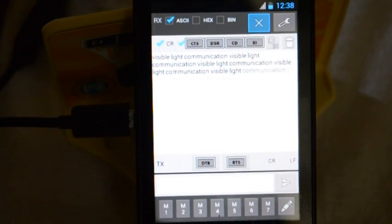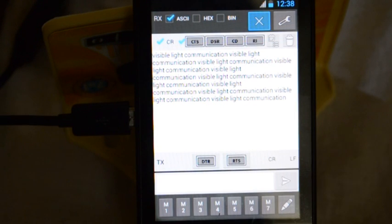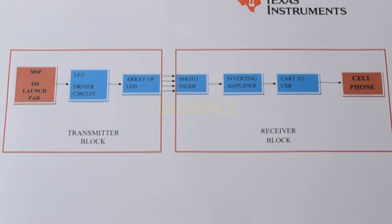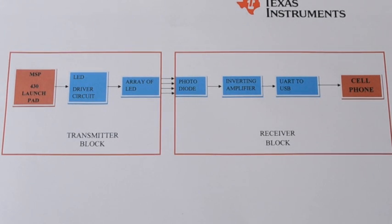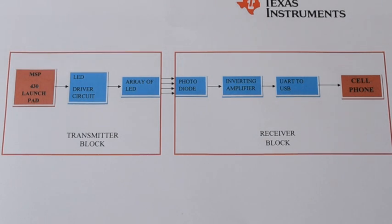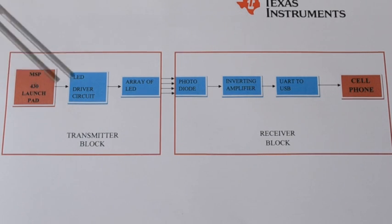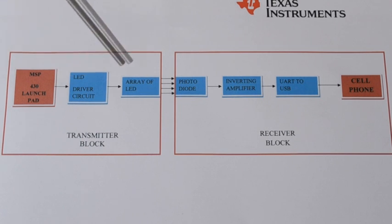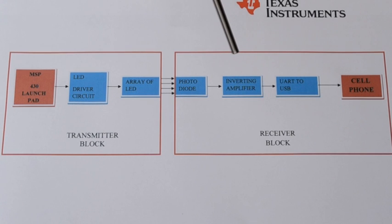This is the reception of text data written on the laptop. In the second proposed model, the costly laptop is replaced by the powerful MSP430 launchpad. The information stored in the launchpad is directly fed to the driving circuit, which modulates an array of LEDs. The receiver section is the same as in Model 1 but made more compact and portable so it can be carried along with the cell phone.